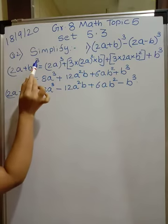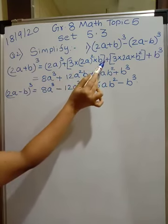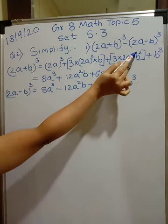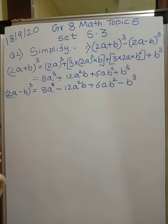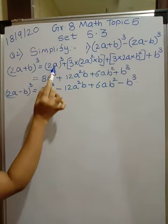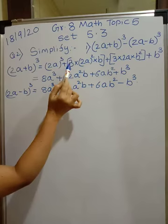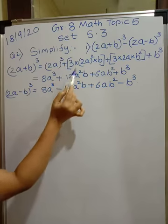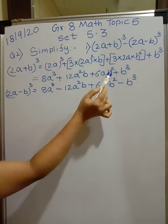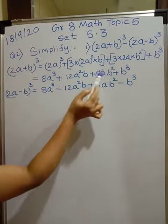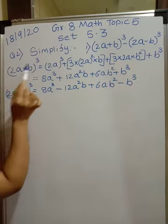Using the identity (a + b)³ = a³ + 3a²b + 3ab² + b³, we expand (2a + b)³. So 2³ is 8a³; 2² is 4, and 4 × 3 is 12, giving 12a²b; then 3 × 2 = 6, so 6ab²; plus b³. This is the expansion of (2a + b)³.